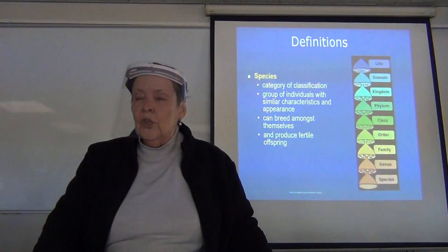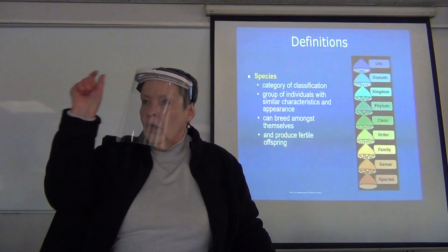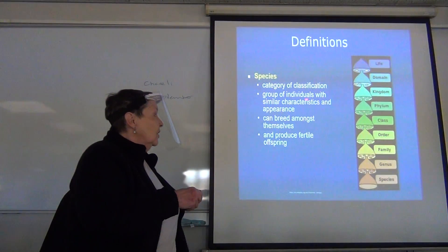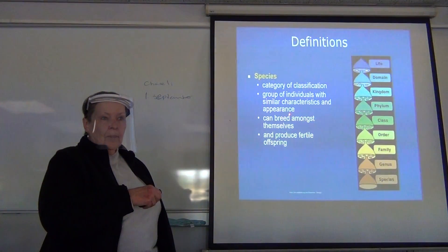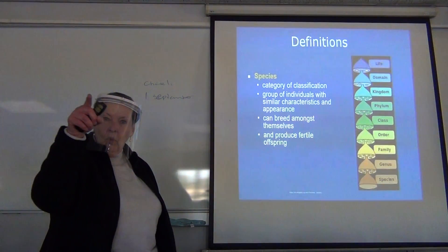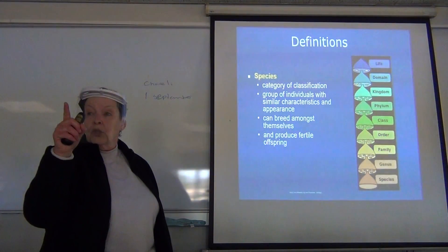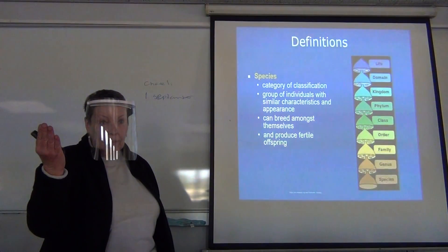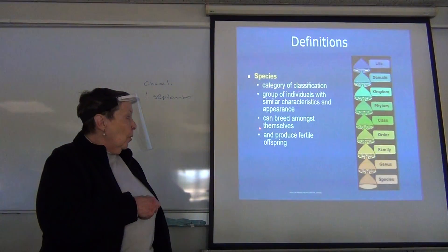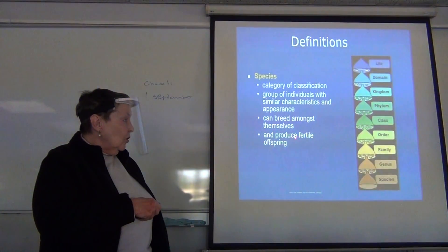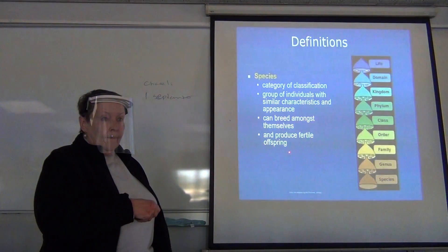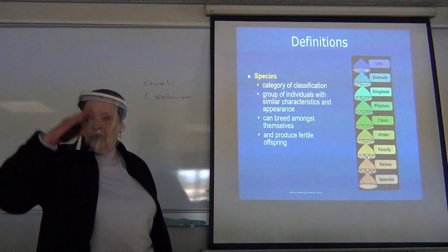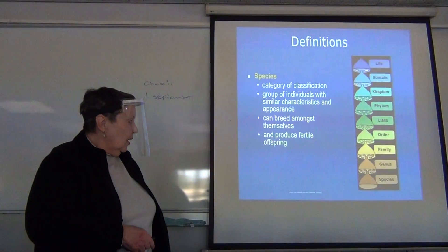That tells you that a horse and a donkey are different species, because horses have individuals with similar characteristics and appearance. You can look at a horse walking up a path and recognise it even if you've never seen that particular horse. Horses can breed with horses and produce fertile offspring — those offspring can in turn produce grandchildren.